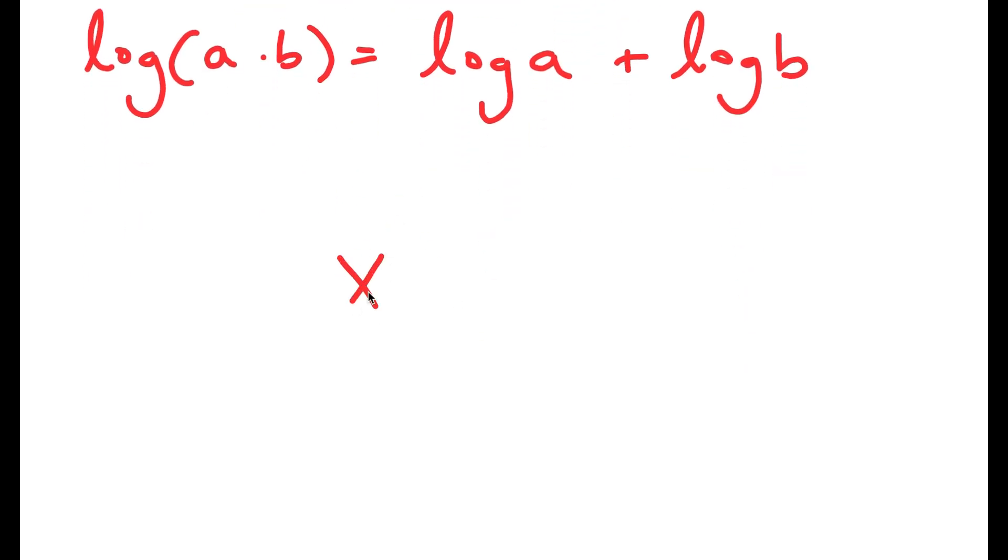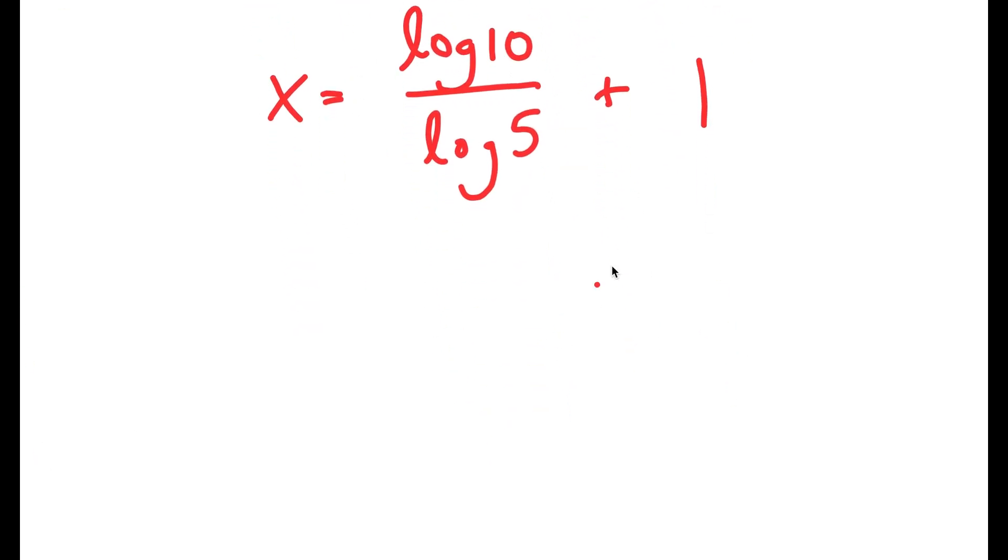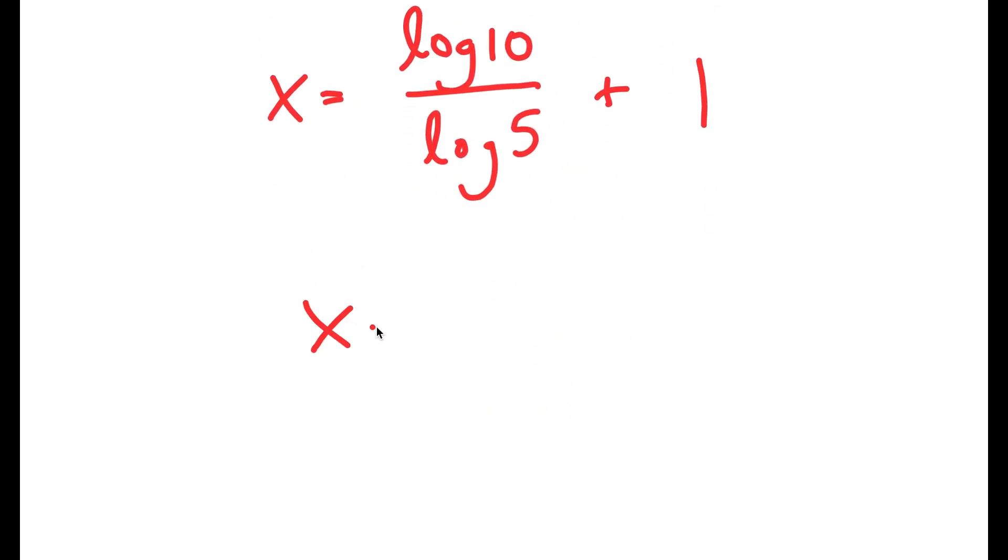So now this turns into log 10 plus log 5 over log 5, which is the same thing as log 10 over log 5 plus log 5 over log 5, which is just 1. And log 10 is also equal to 1, so I get x equals 1 over log 5 plus 1.